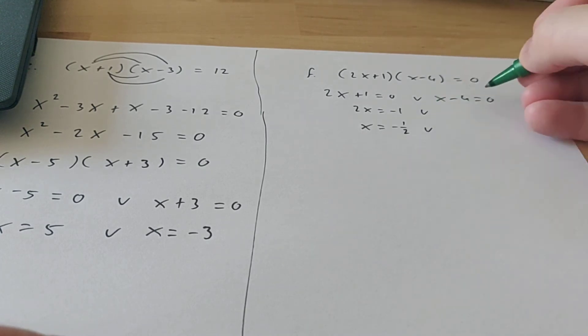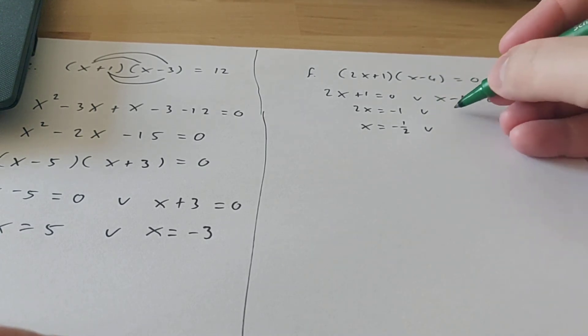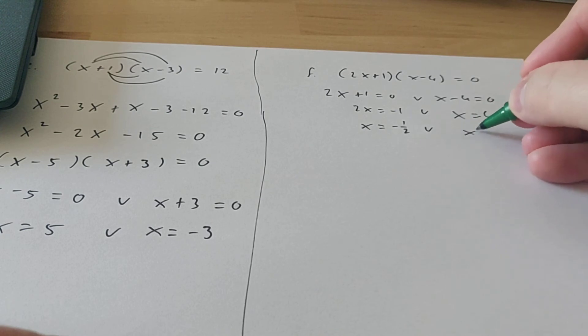And on the other side, we have... Well, we just move the 4 to the other side, so x is 4. So this is how you do that.